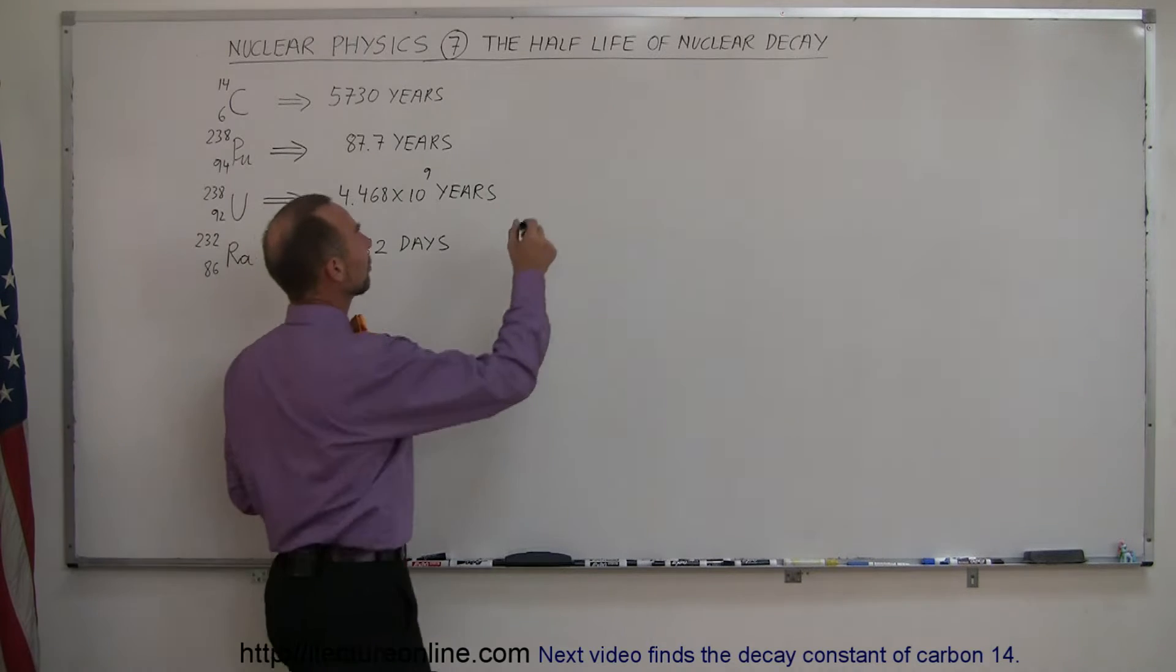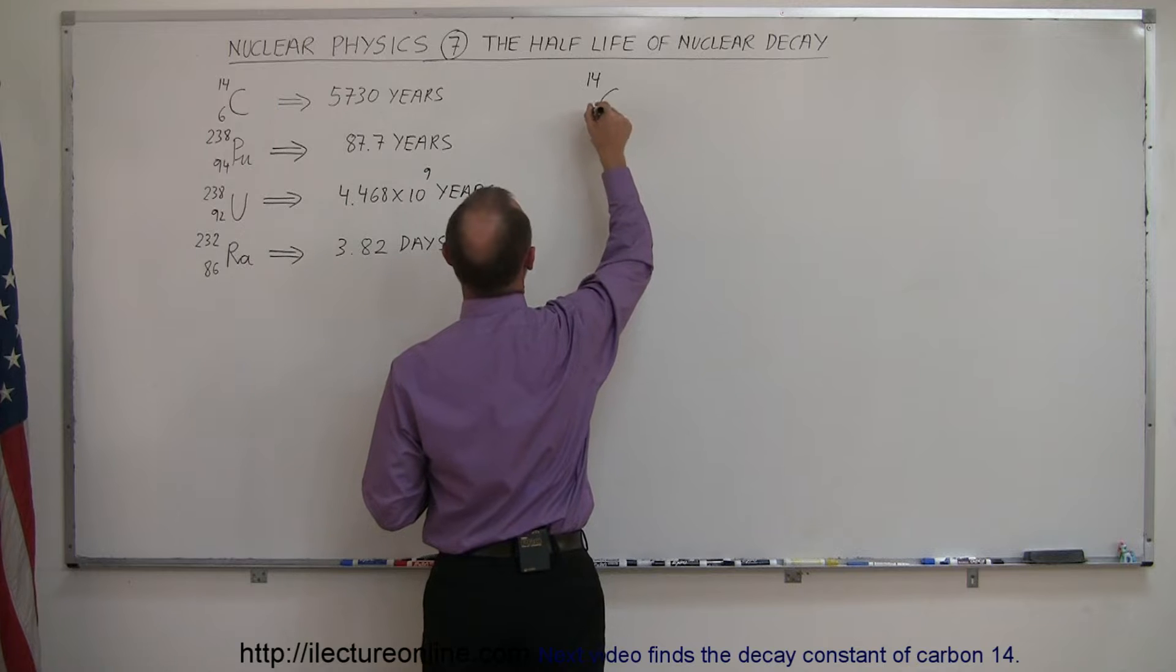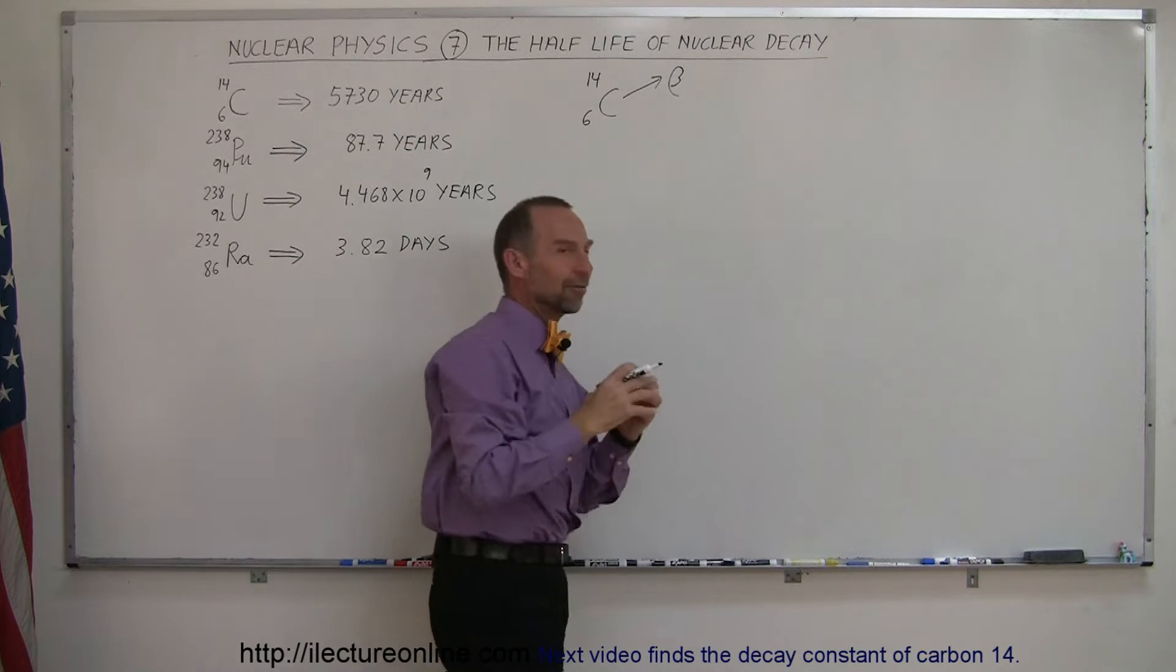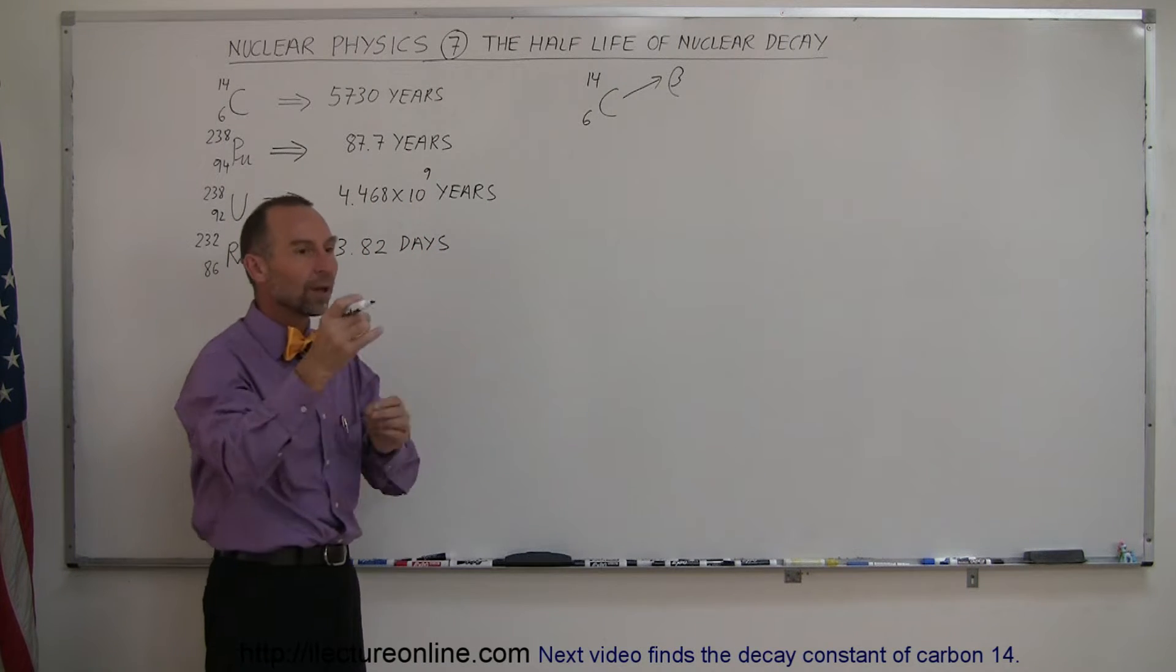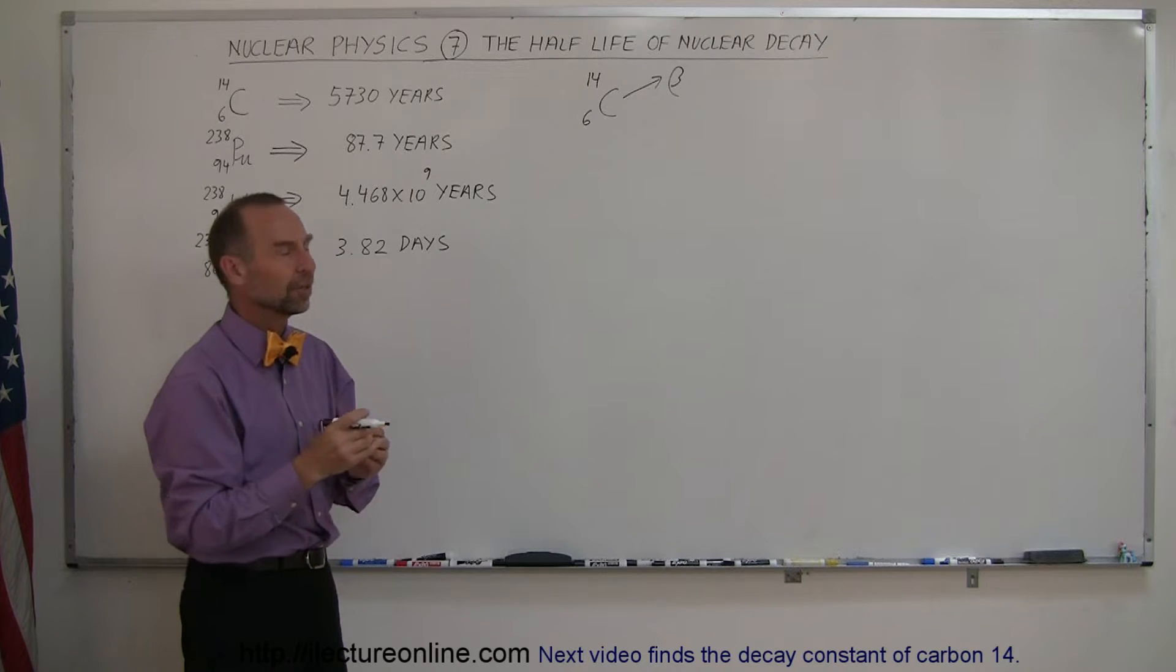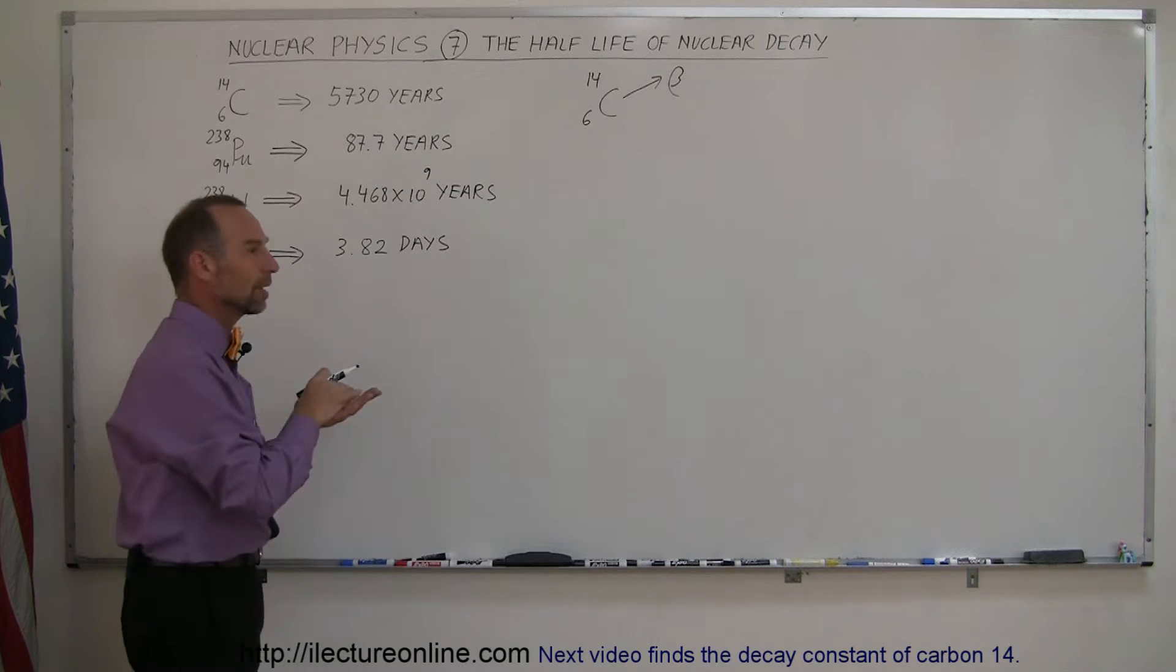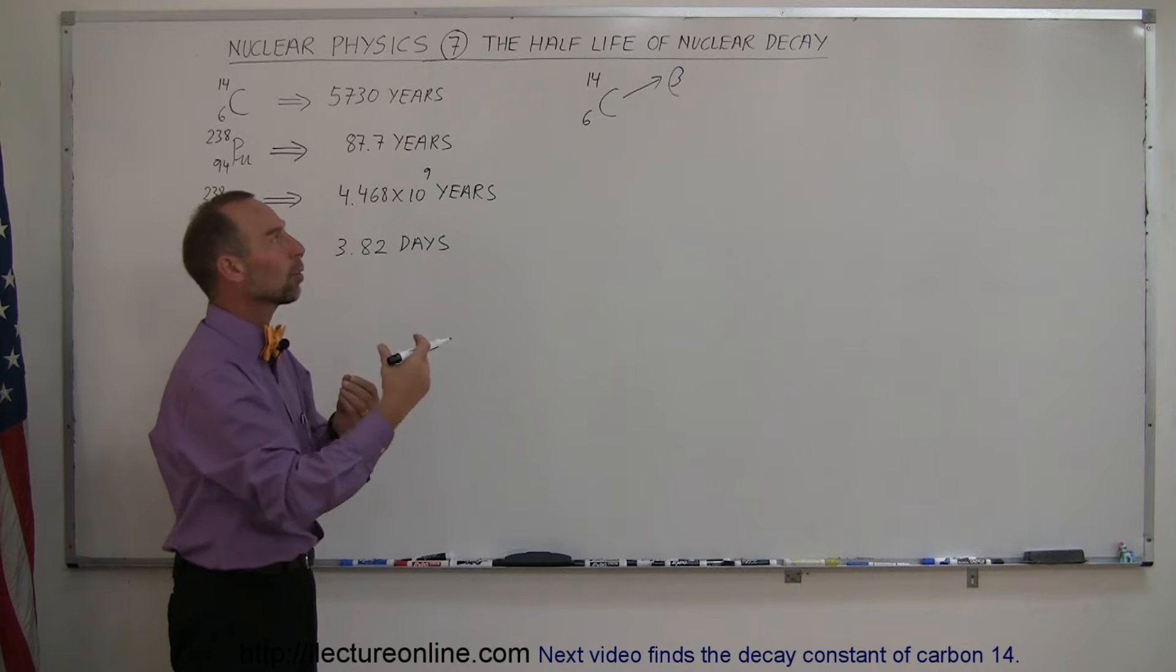For example, carbon-14, which is a radioactive isotope of carbon, once in a while will shoot out a beta particle. So let's say you have a sample of radioactive carbon-14. Once in a while, one of these carbon-14 atoms will shoot out a beta particle. A beta particle is an electron, a negatively charged electron. And it does so by taking a neutron in the nucleus and ejecting a negative charge and turning it into a proton.